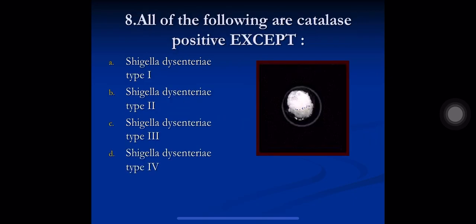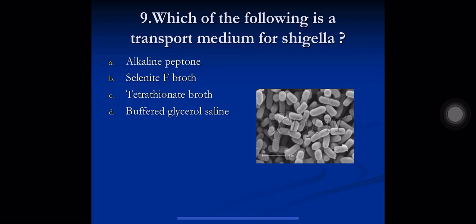Question 8: all of the following are catalase positive except? A) Shigella dysenteriae type 1, B) Shigella dysenteriae type 2, C) Shigella dysenteriae type 3, D) Shigella dysenteriae type 4. Shigella dysenteriae type 1 is quite unique, with features different from other Shigella. It is catalase negative, while all other Shigella are catalase positive. The answer is A) Shigella dysenteriae type 1.